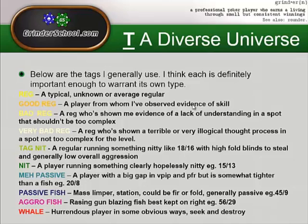A Bad Reg is someone who's shown the opposite — evidence of a lack of understanding in a spot that shouldn't typically be too complicated. This is again relative to your stakes: if you're playing 5NL you can't really call someone a Bad Reg for failing to understand a really complex range situation, but if you're playing 100NL and you see someone without a solid three-bet strategy — three-betting hands that just make no sense — that probably shows a lack of understanding of how they're playing their range.